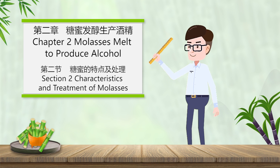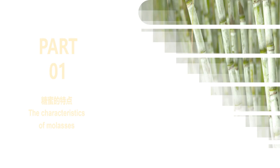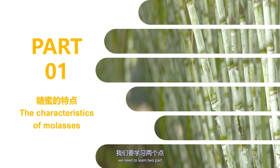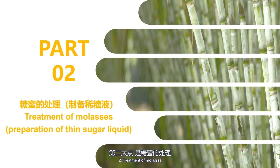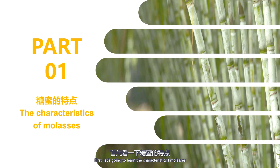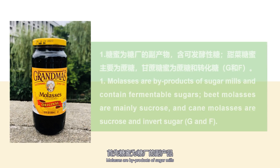同学们好，欢迎来到今天的课堂。今天还是学习糖蜜发酵生产酒精的内容，主要学习第二节——糖蜜的特点及处理。我们要学习两个要点：第一点是糖蜜的特点，第二点是糖蜜的处理。首先看一下糖蜜的特点。